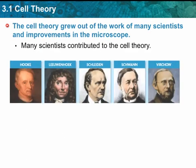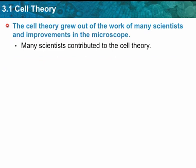Hook was one of the first people to identify cells. Leeuwenhoek, Schleiden, Schwann, and Virchow were important men who continued the development of the cell theory.